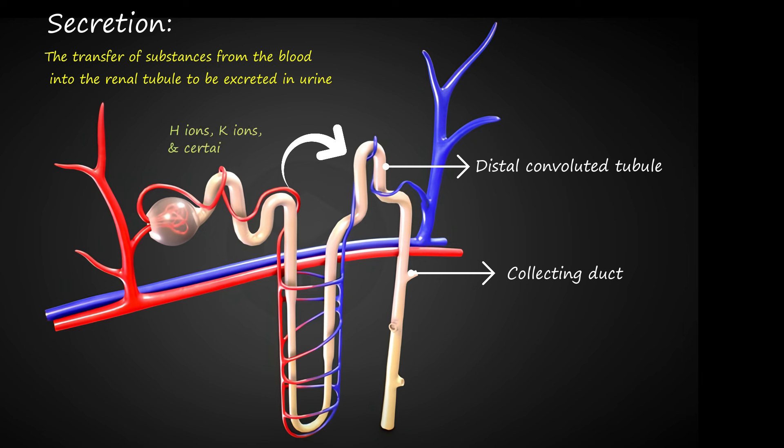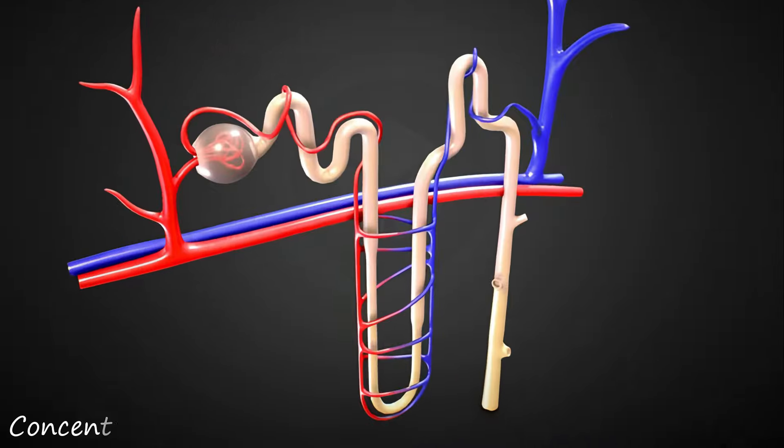Hydrogen ions, potassium ions, and certain drugs are actively transported from the blood into the tubule. Secretion helps in maintaining the body's acid-base balance and eliminating waste products and excess ions. Then comes concentration.